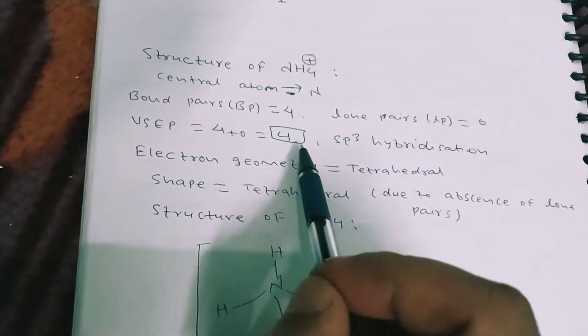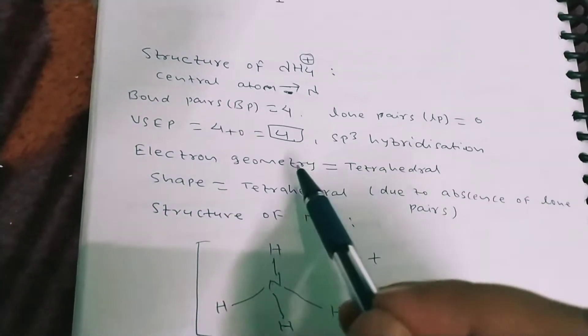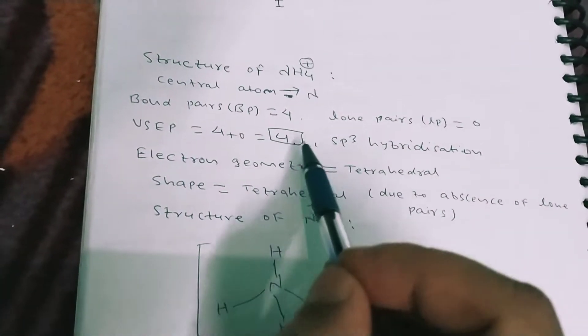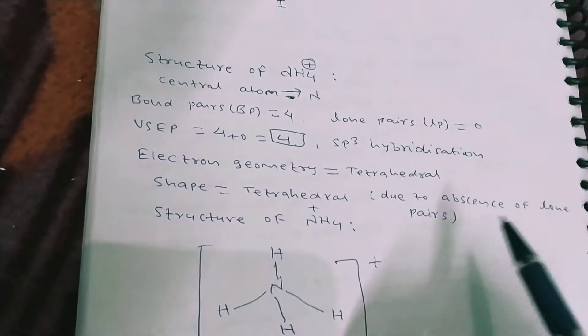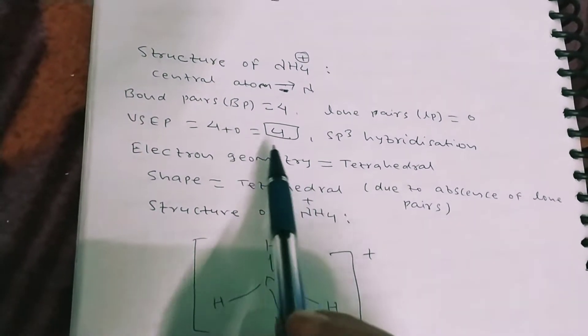4 plus 0. Here the hybridization is sp3 because the total electron pairs is 4. We know that if the total electron pairs is 4, then sp3...